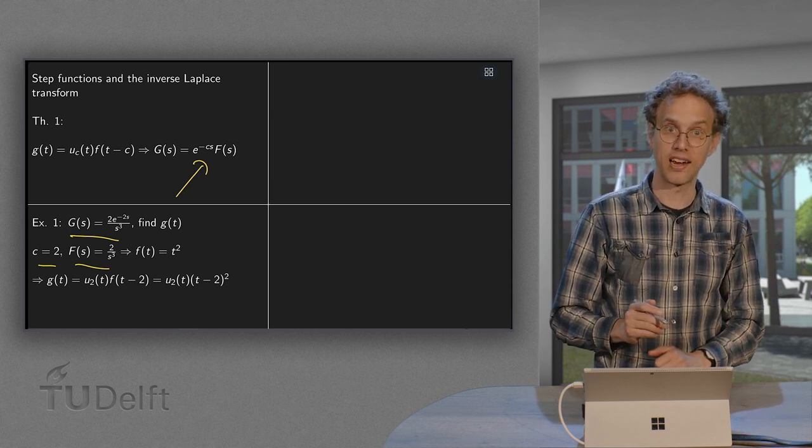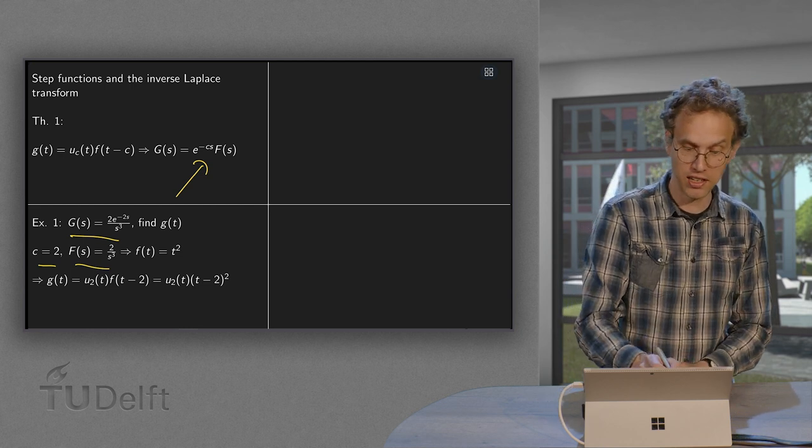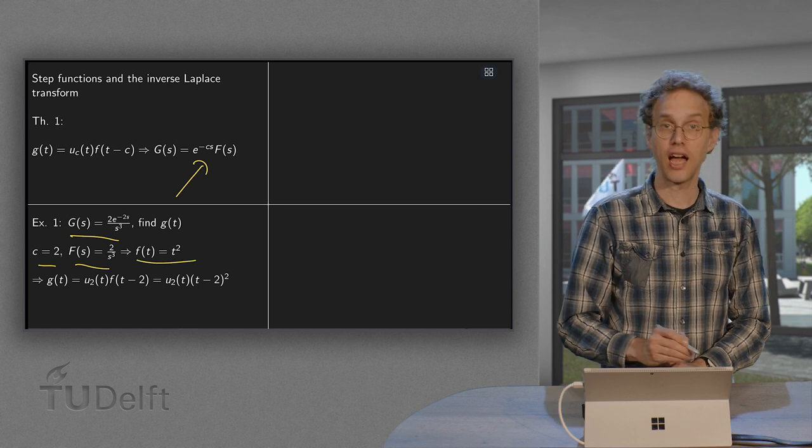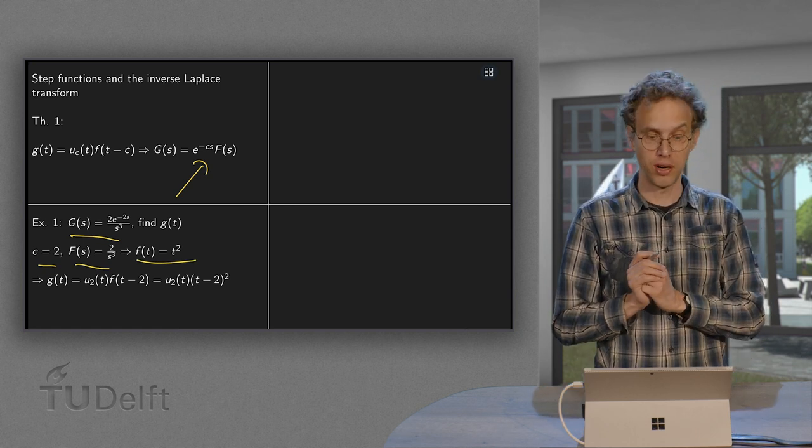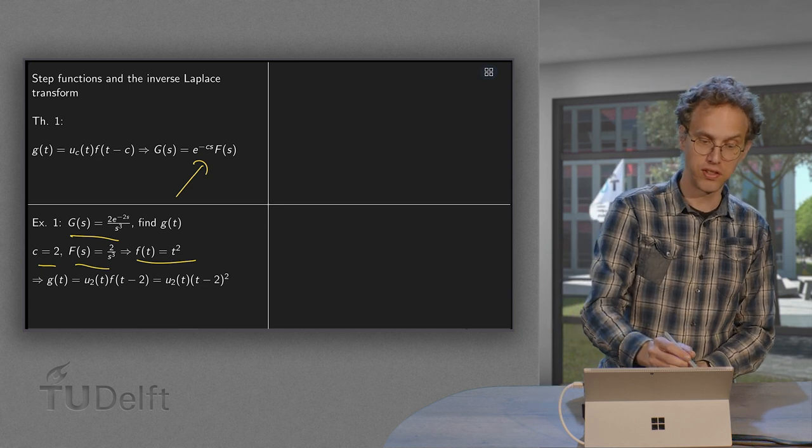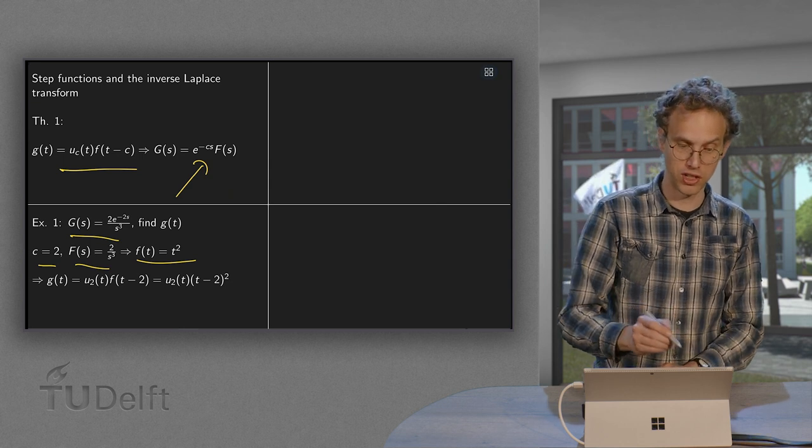Then we can transform back and find our f of t. It is in our table. We have done it analytically before: f of t equals t squared. Then we can use our theorem to find G of t: G of t equals uC times f of t minus C. C equals 2, f equals t squared.